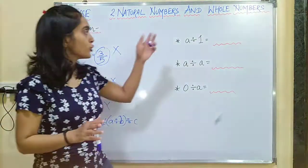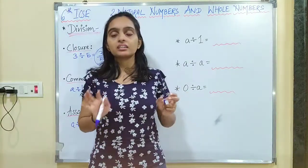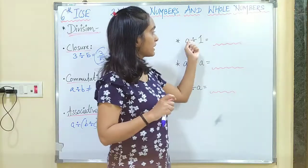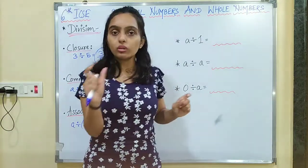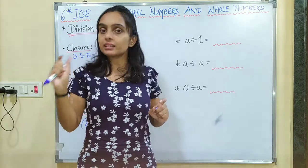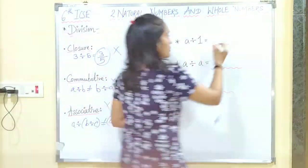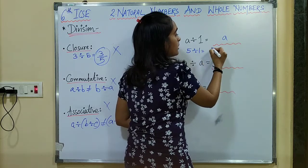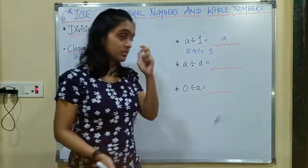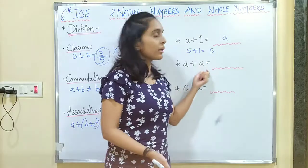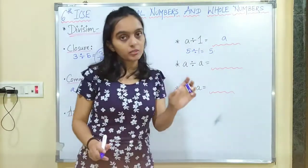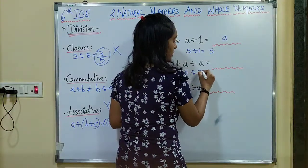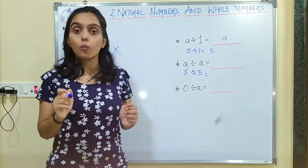Now there are a few properties which we have already studied and these do not have any specific name. The first property is a divided by 1: any whole number divided by 1 is again that same whole number, so 5 divided by 1 is again 5. The second is a divided by a: a whole number divided by itself gives 1, so 5 divided by 5 equals 1.